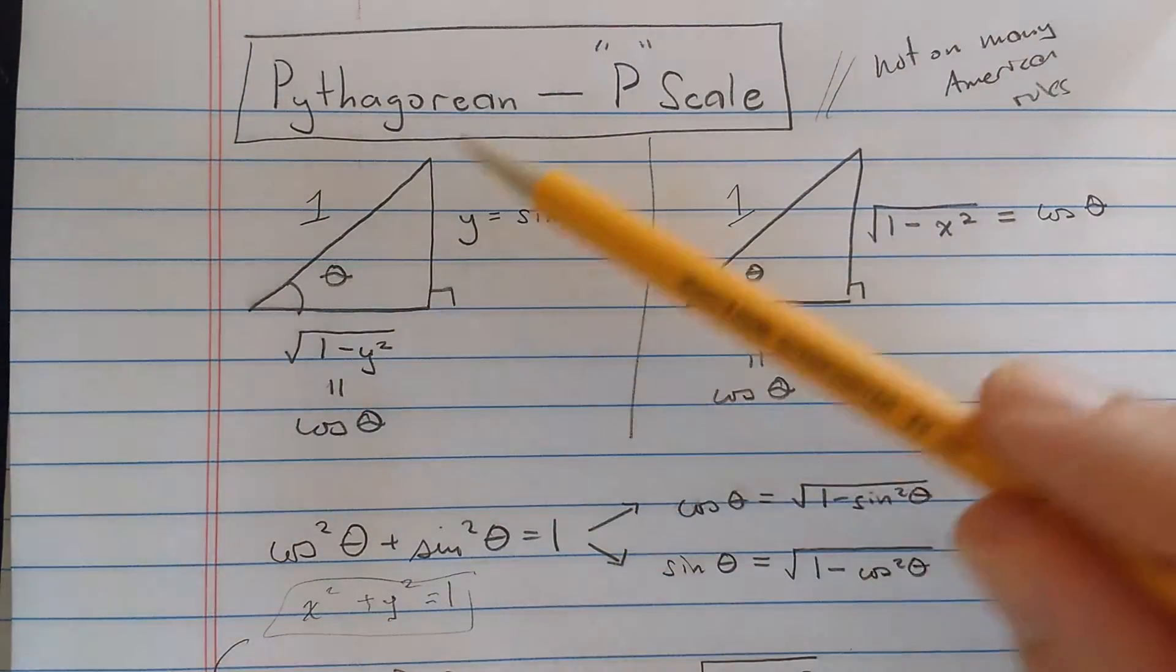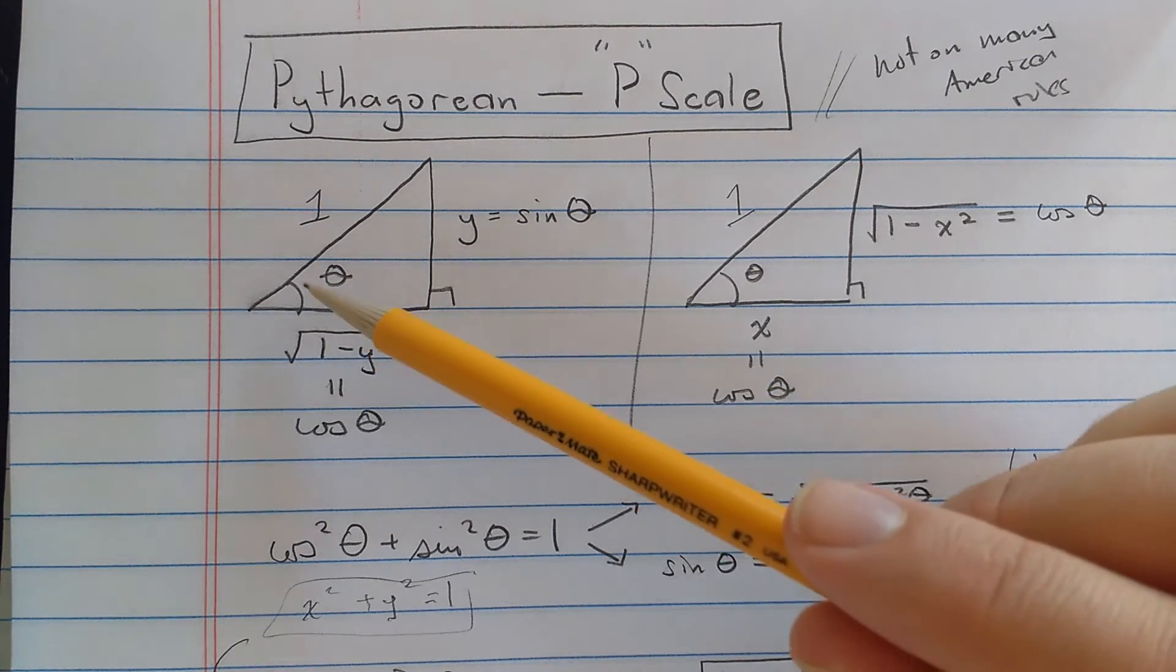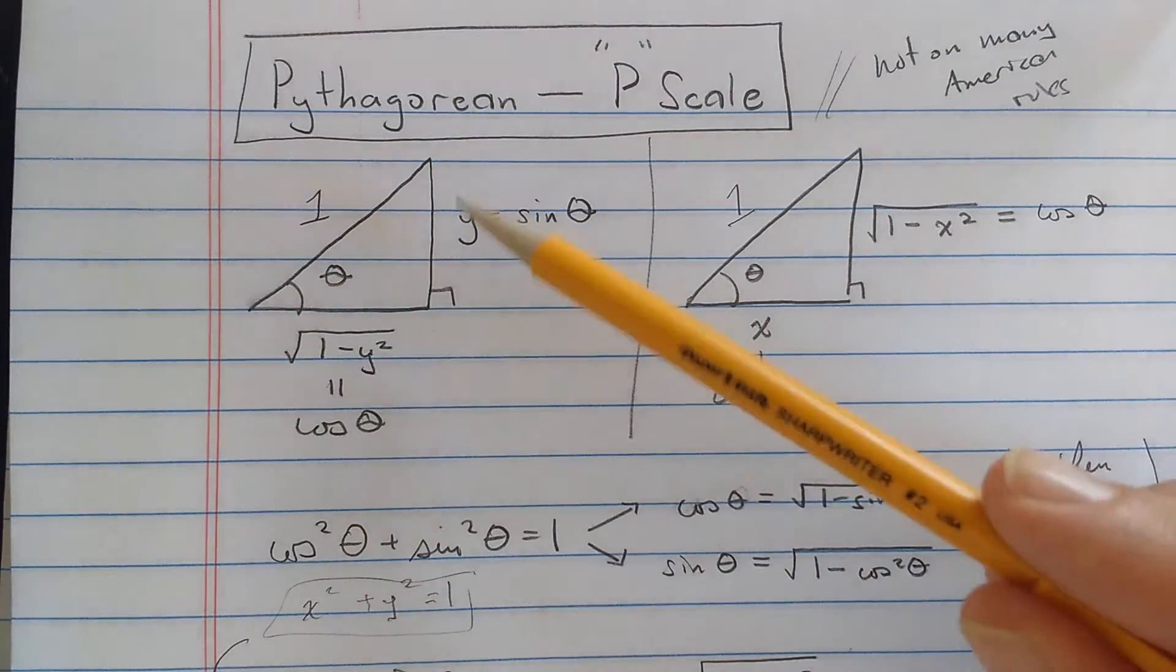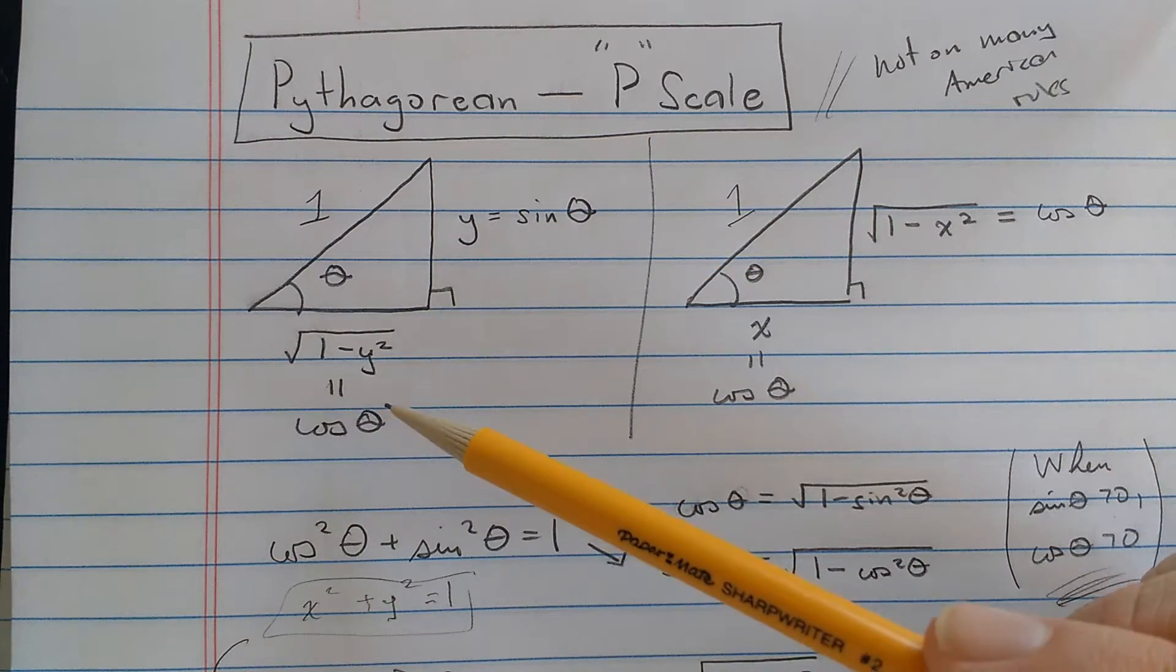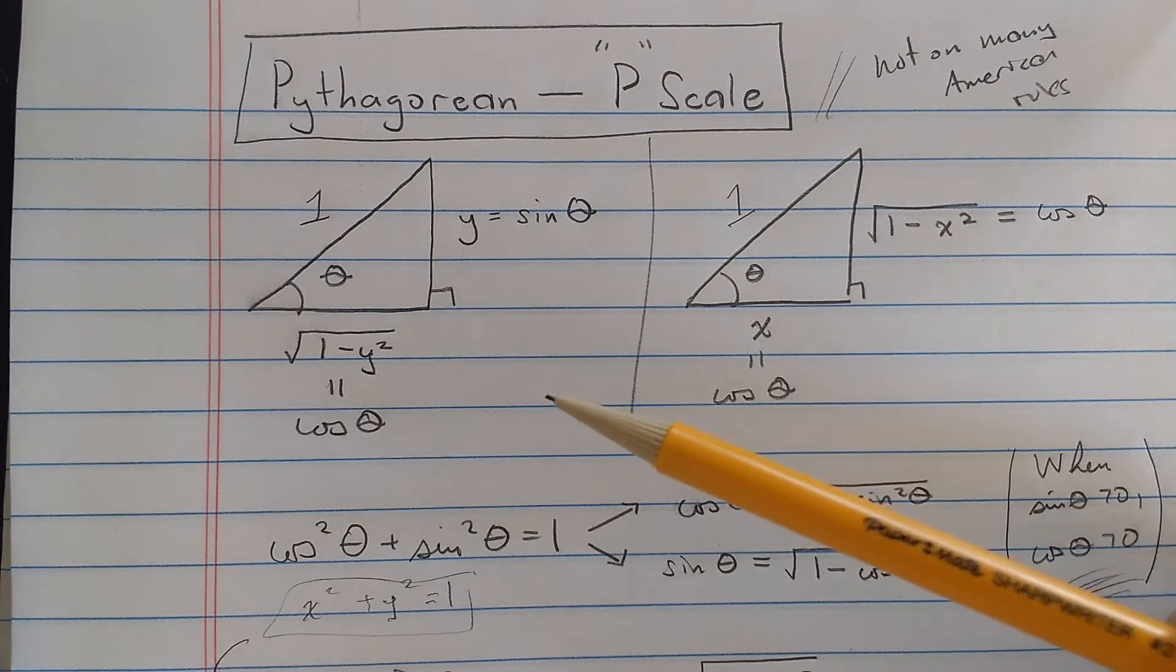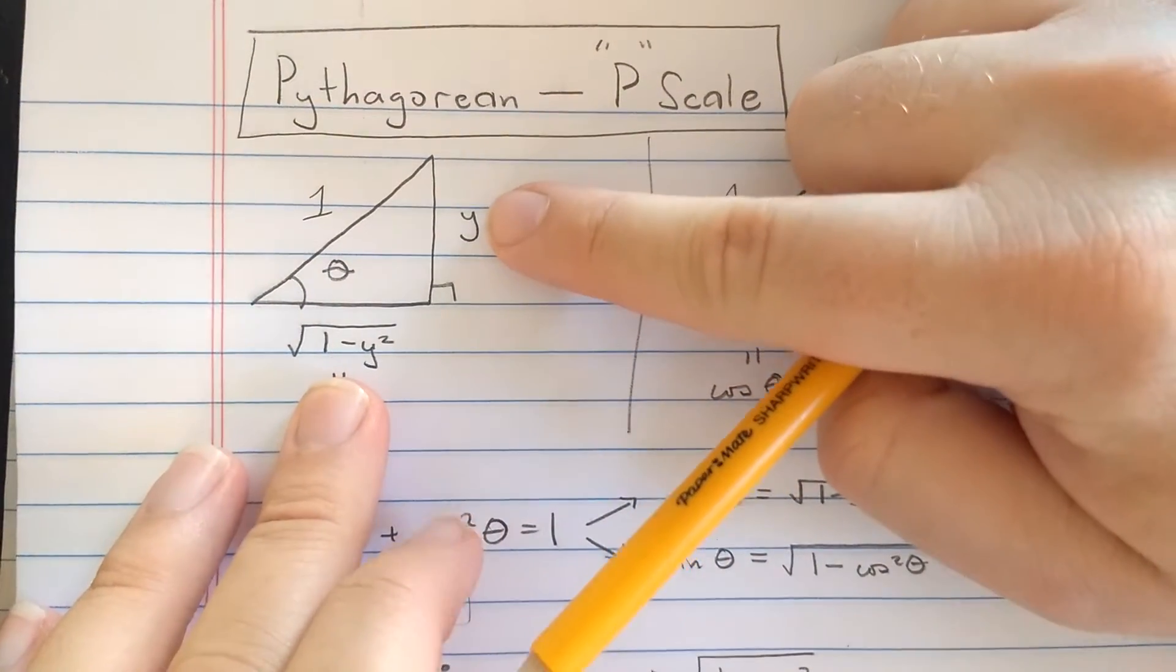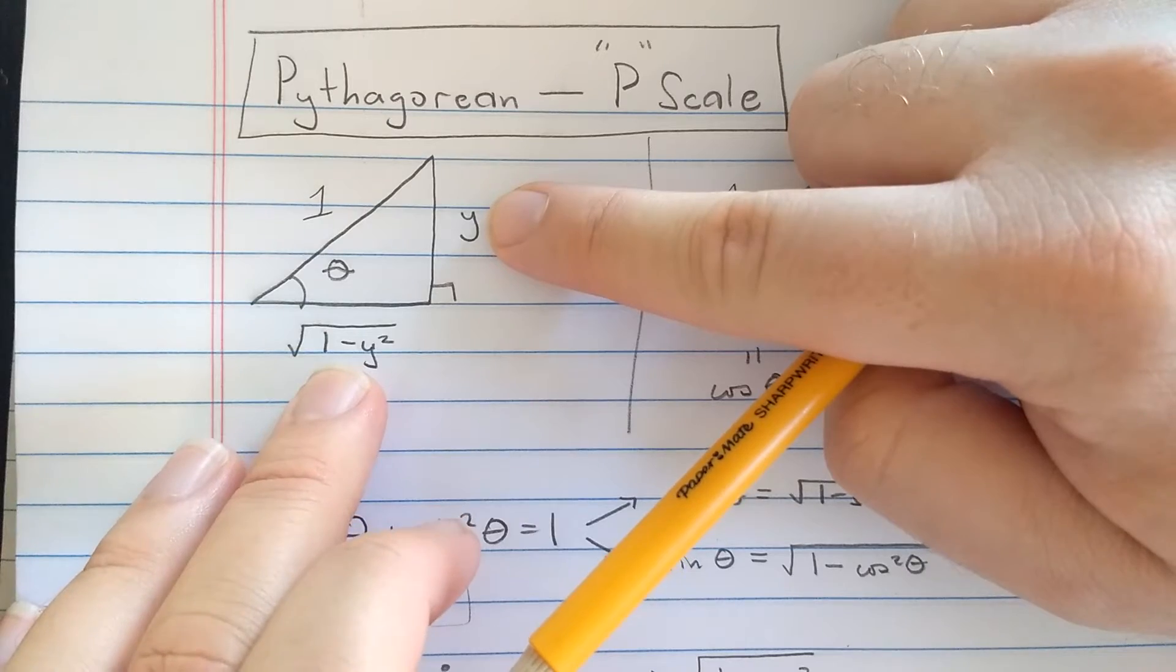Let's review a little trigonometry. If I have this triangle, which is a right triangle, hypotenuse length 1, this angle here is theta, this is the same triangle, just two copies. Then this side here with length y has length sine theta, and then this side length here is cosine theta.